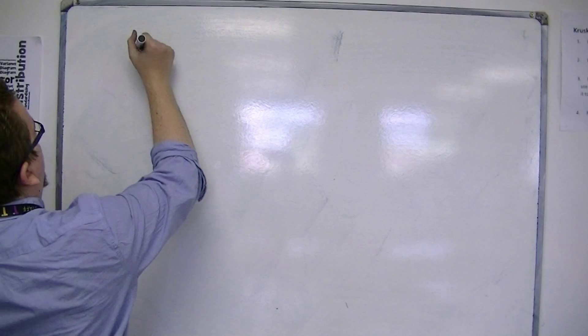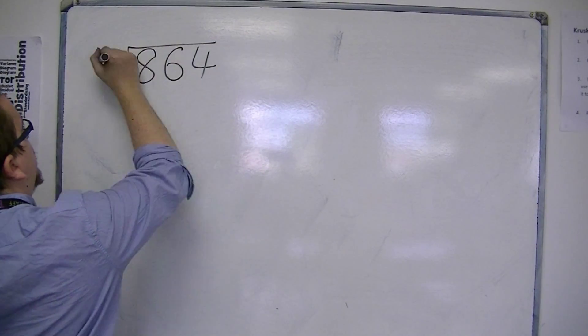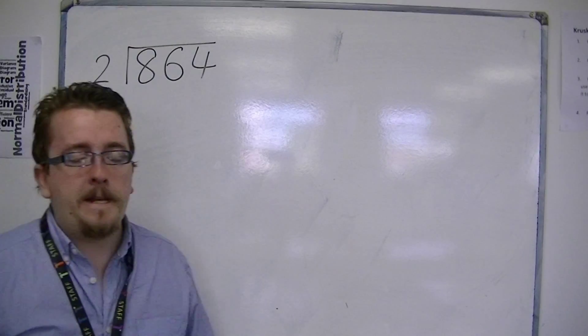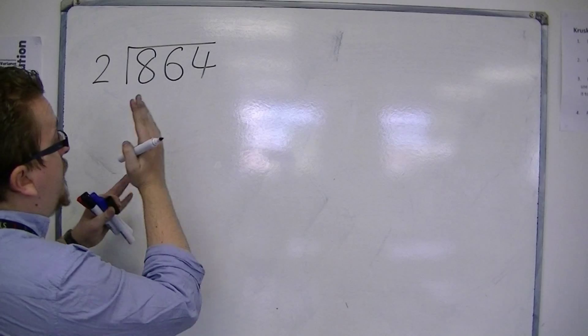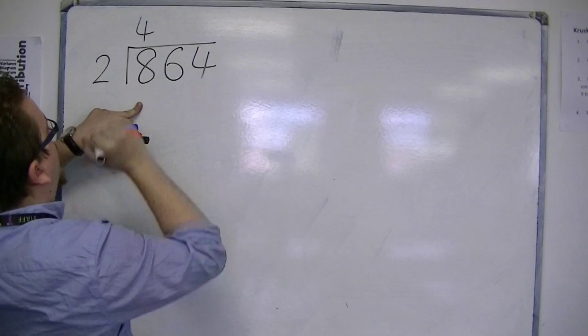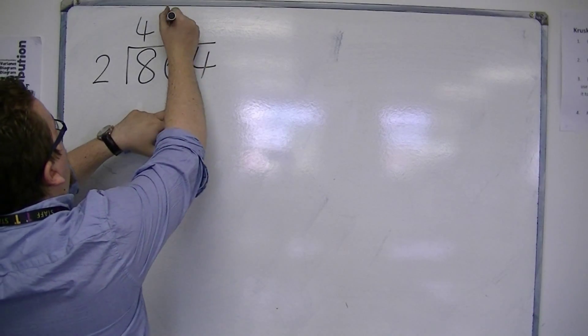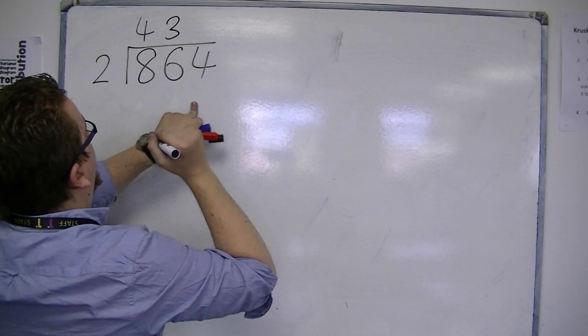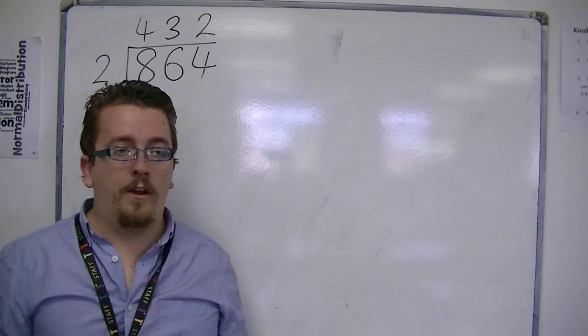So something like 864 divided by 2. Something really easy. You could do this one in your head. Working from the left to the right, 2's into 8 go 4. 2's into 6 go 3. And 2's into 4 go 2. So the answer is 432. Nice and quick.